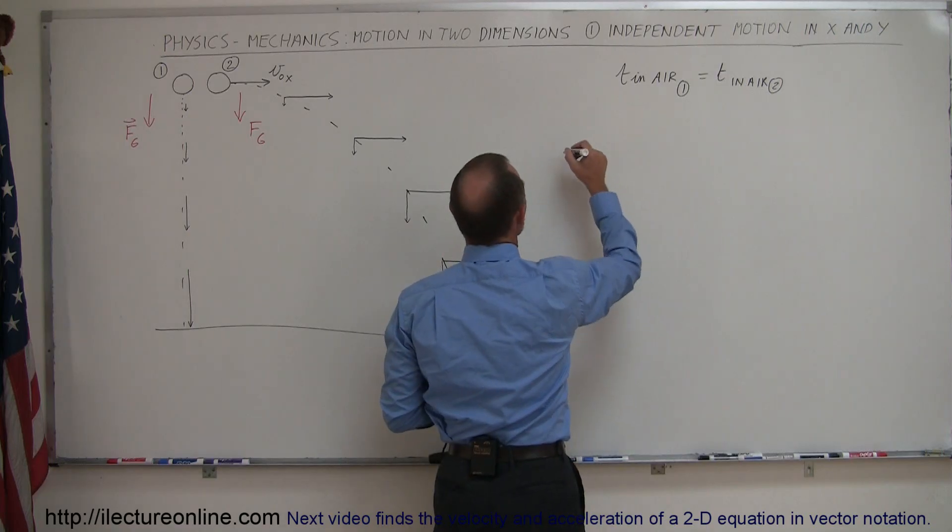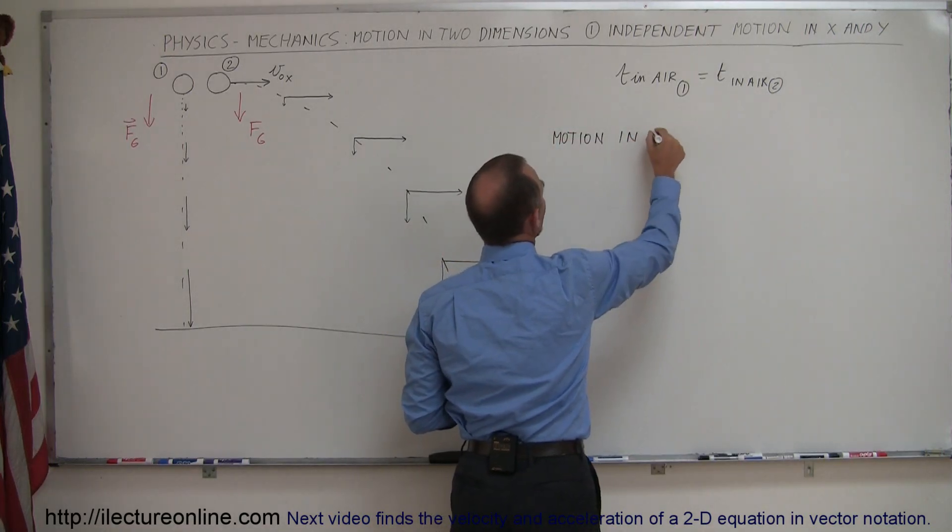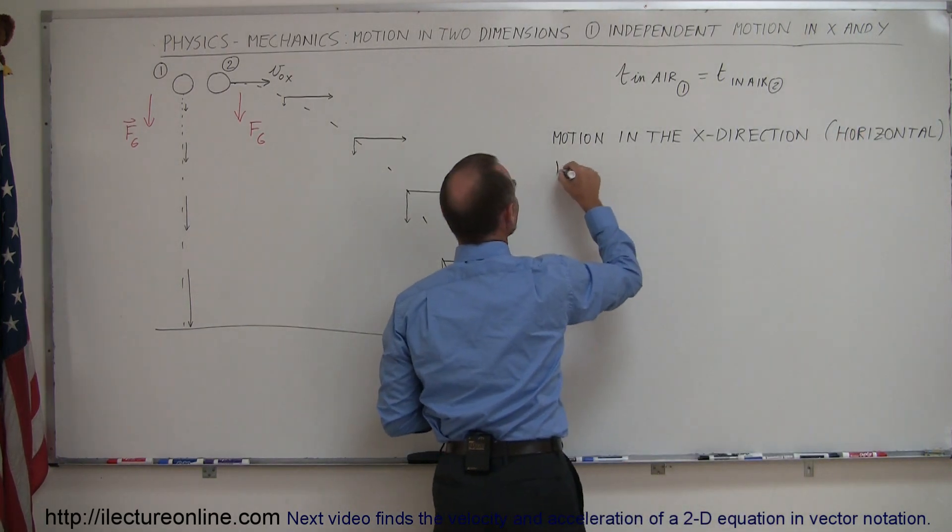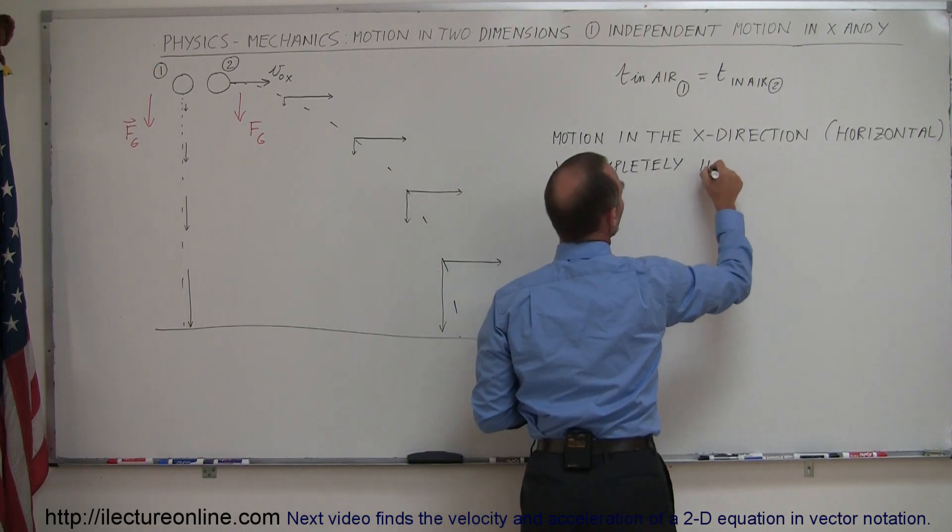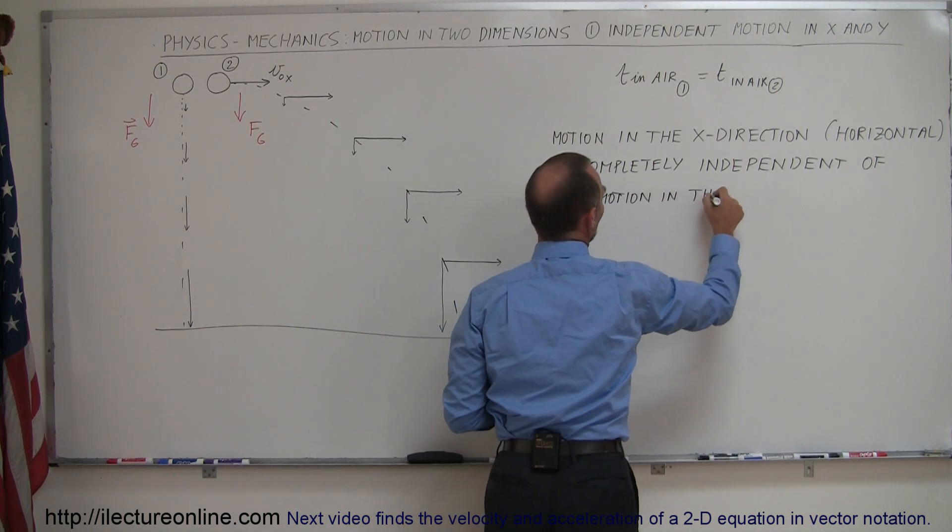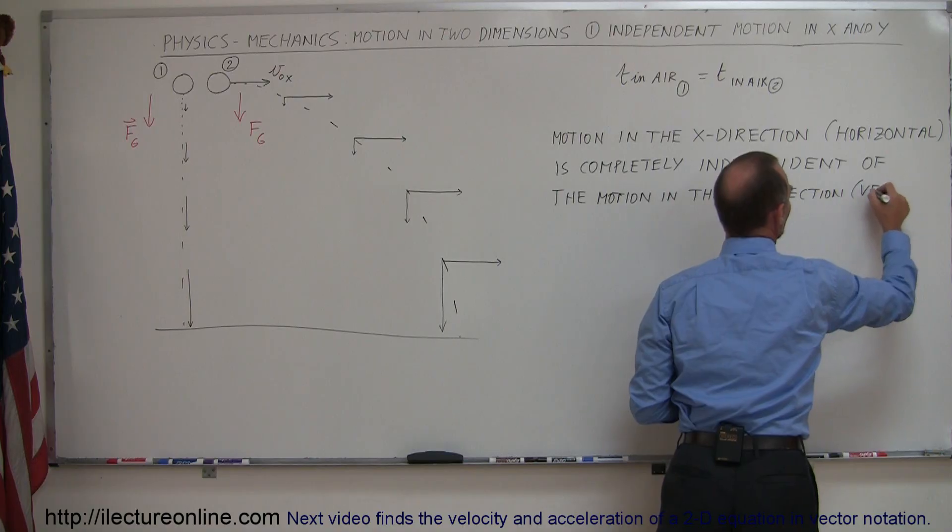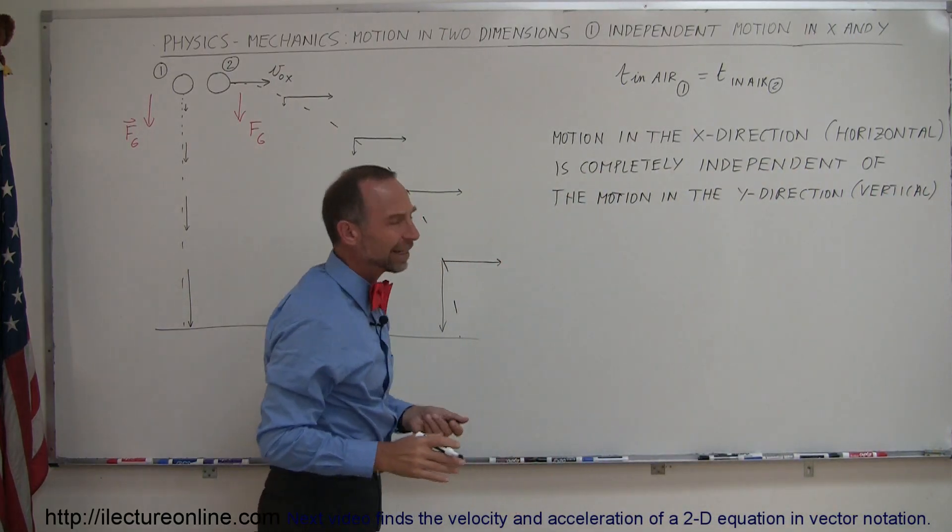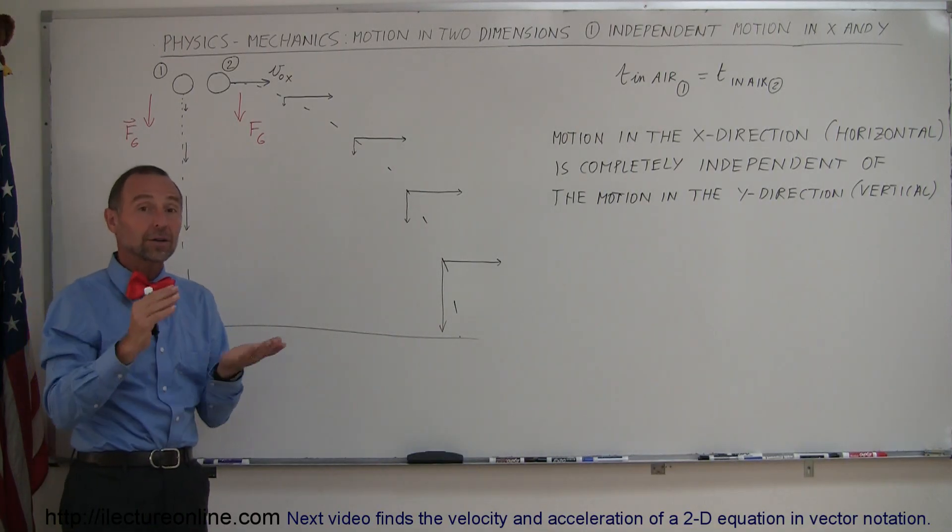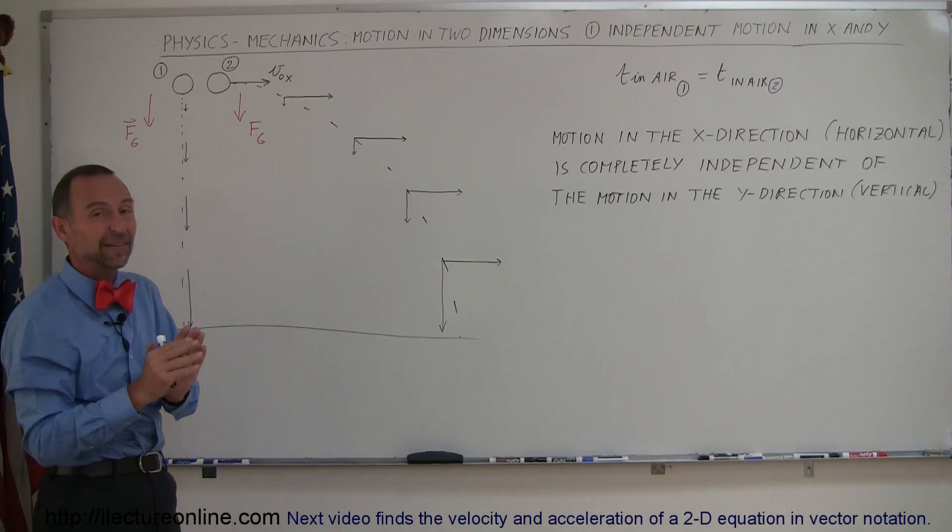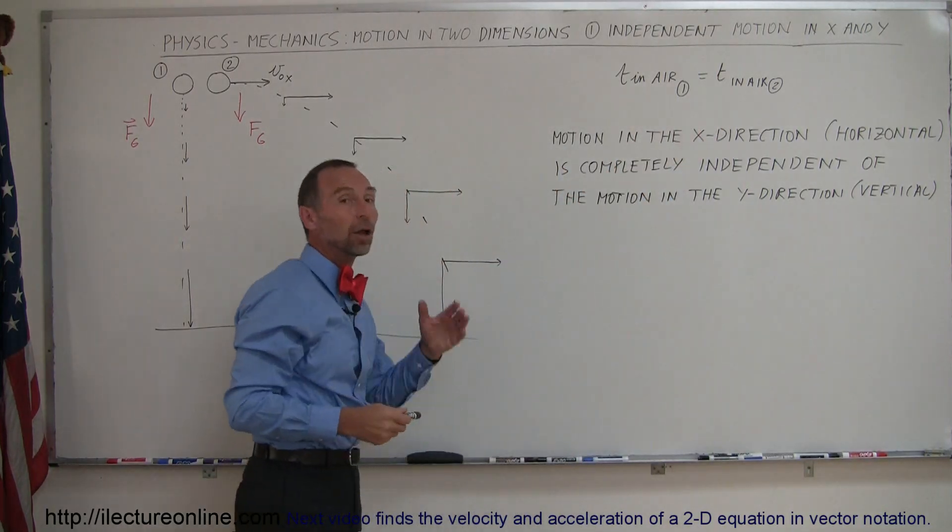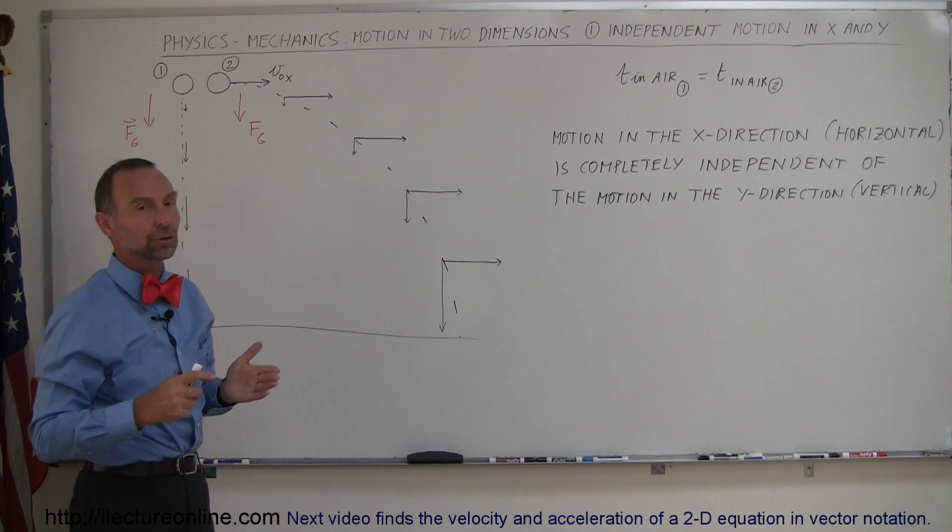Also we should always keep in mind that the motion in the x direction, so we're talking about the horizontal direction, is completely, and I mean completely independent of the motion in the y direction. Of course that would be the vertical motion. So why did I take the time to write that down? Well it's a really important concept. So in all problems I'm going to do with projectile motion you can look at the horizontal motion and the vertical motion completely independent as they have nothing to do with each other. The only thing is that the time in the air depends upon how long it takes for the object to hit the ground in a vertical direction.